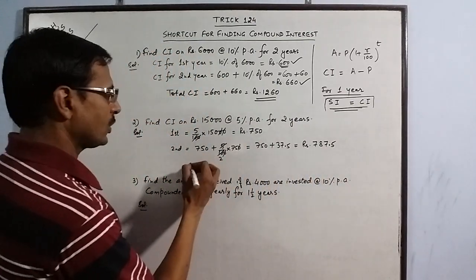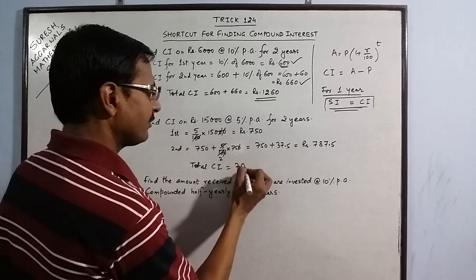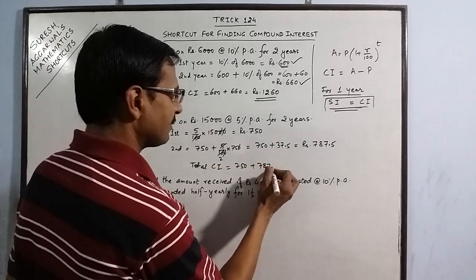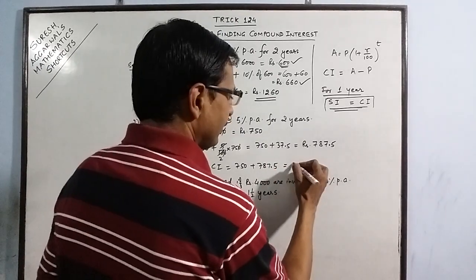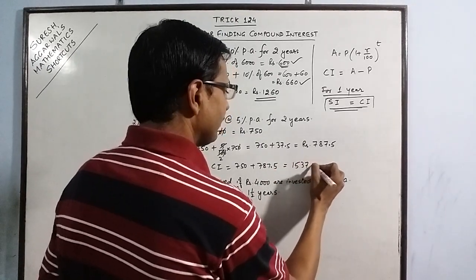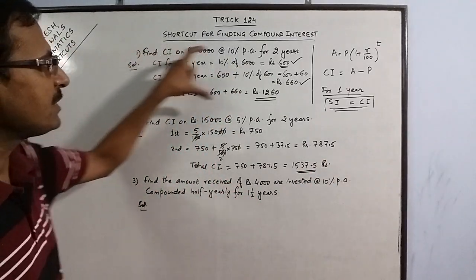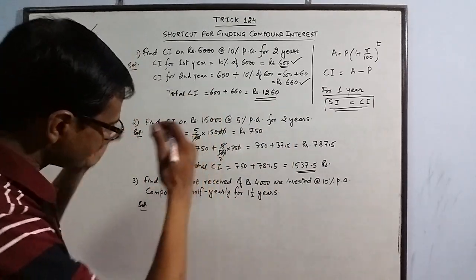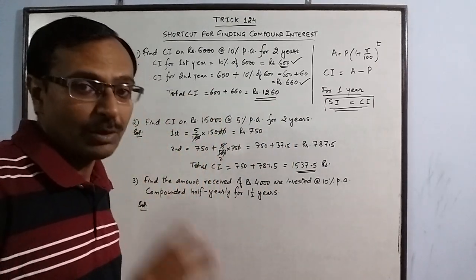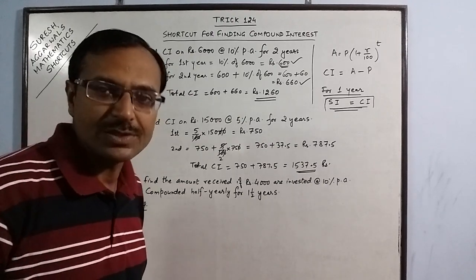Just add, total CI will come out to be 750 plus 787.5. The total CI, Rs. 1537.5. The statements here written have been reduced. You can further reduce these steps and practice. You will be able to do it orally also if you practice 10 to 15 questions of this type.